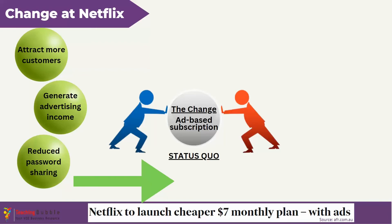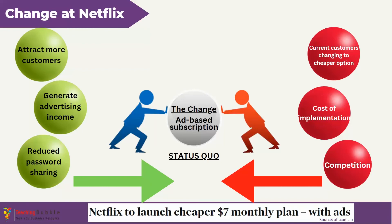Examples of restraining forces could include current customers shifting towards the cheaper plan, causing a loss of revenue as they move from a more expensive plan to a cheaper one. There could also be a significant cost of implementing the new plan in terms of employee involvement and technology upgrades. Additionally, competition entering a similar market — as seen with Disney and Binge offering customers a similar subscription plan — may also work against the change, keeping Netflix in its current state.